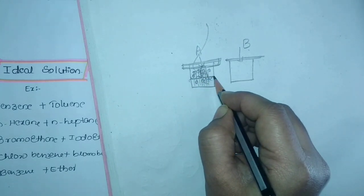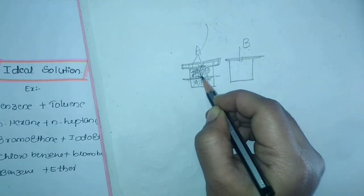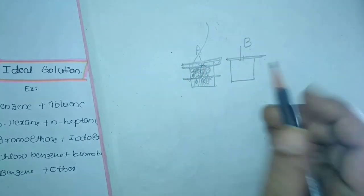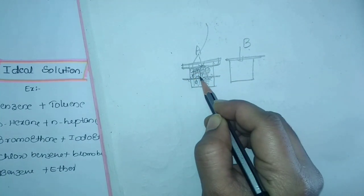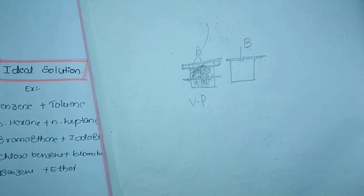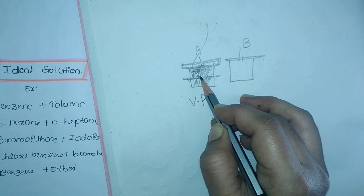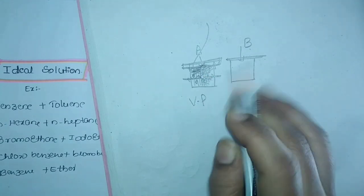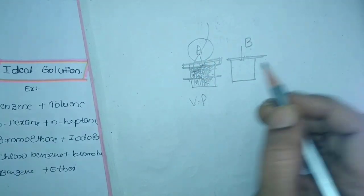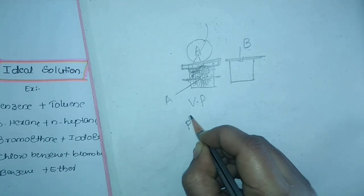When equilibrium is reached, the liquid evaporates and condenses on the surface of the liquid continuously. Whatever pressure the vapors of a liquid apply on the surface of the liquid is known as vapor pressure. In simple terms, vapor pressure is the pressure applied by the vapors of a solvent or liquid on the surface of a liquid which is in equilibrium. The pressure applied by component A is known as P°A.